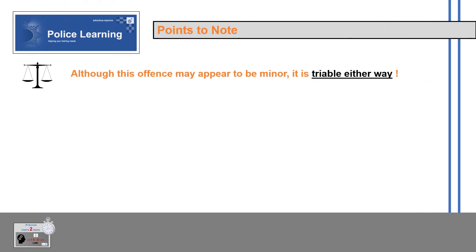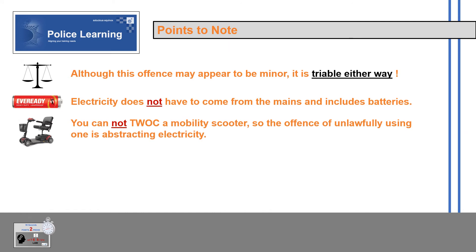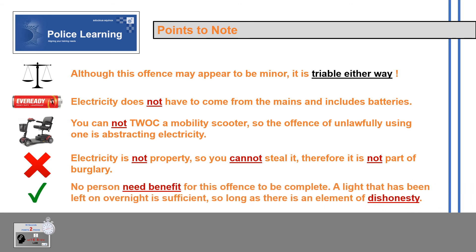Points to note: Although the offence may appear minor, it's triable either way. Electricity does not have to come from the mains and includes batteries. You cannot TWOC a mobility scooter, so the offence of unlawfully using one is abstracting electricity. Electricity is not property, so you cannot steal it — therefore it's not part of burglary. No person need benefit for this offence to be complete; a light that has been left on overnight is sufficient, so long as there is an element of dishonesty.